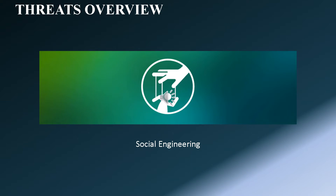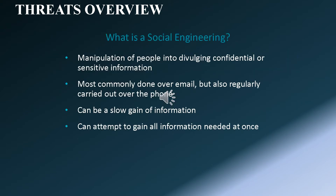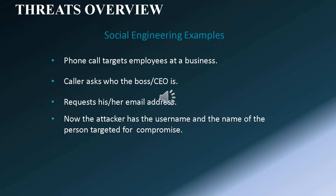Social engineering. What is social engineering? It is a manipulation of people into divulging confidential or sensitive information. Most commonly done over email, but also regularly carried out over the phone. It can be a slow gain of information, or it can attempt to gain all information needed at once. For example, a phone call targets employees at a business — the caller asks who the boss or CEO is, requests their email address, and now the attacker has the username and the name of the person targeted for compromise.